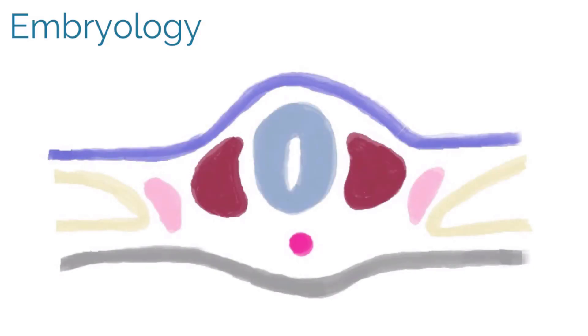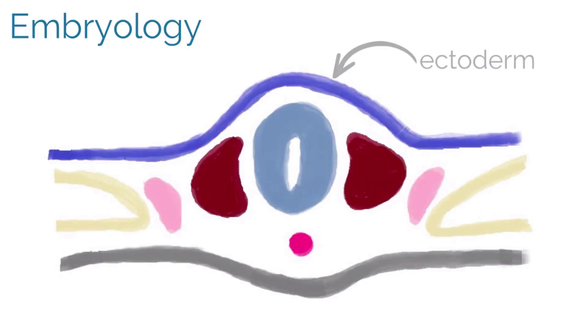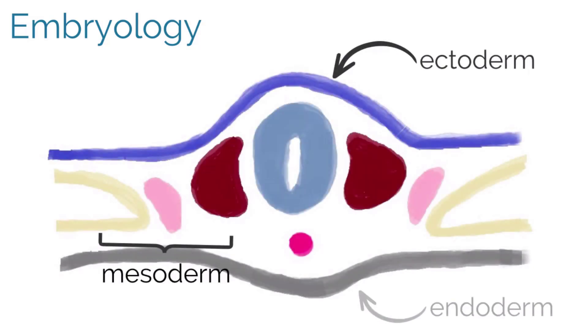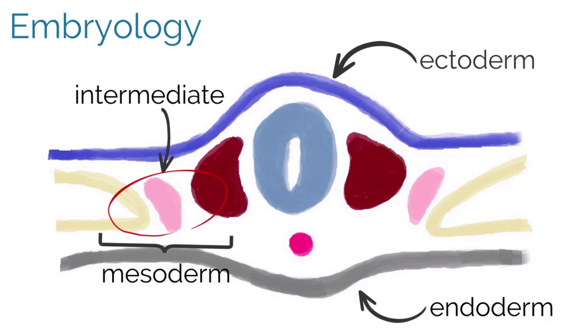To understand the pathophysiology, it is important to remember the embryologic origins of the reproductive system. The embryonic disc transforms into ectoderm, mesoderm, and endoderm during the third week. Between the third and fifth week, development of the urogenital tract begins as intermediate mesoderm on either side of the fetus.